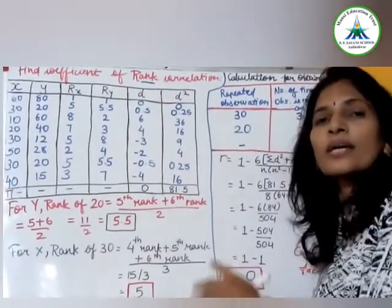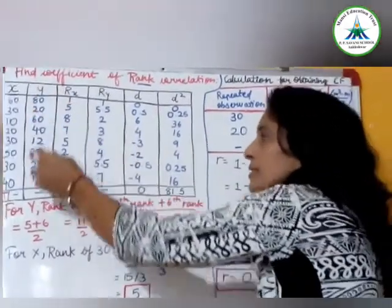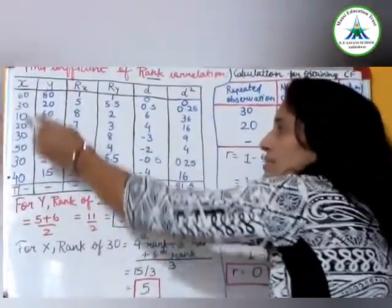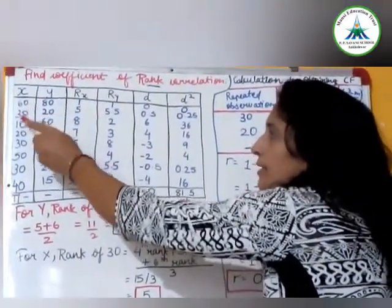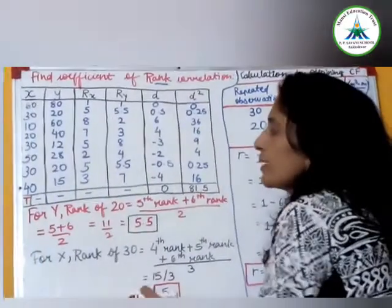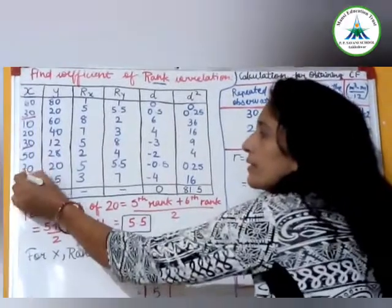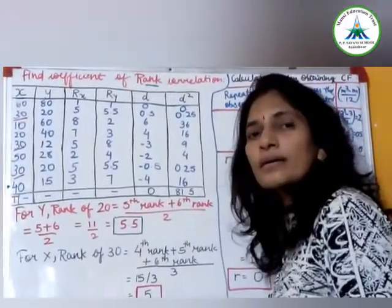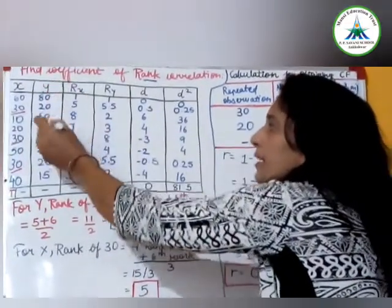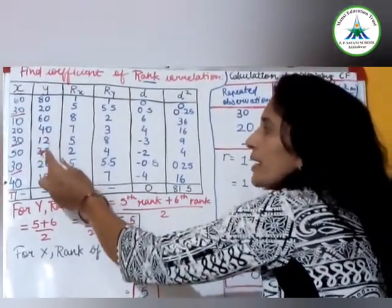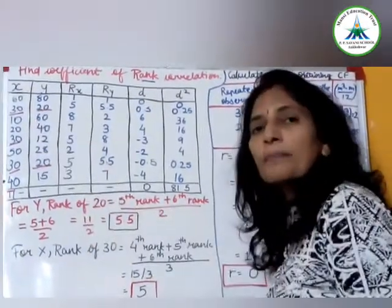This is the sum for x value and y value. See here for x: 60, 30, 10, 20, 30. It means repeated again, 30. Again 30, it means 3 times 30 repeated for x. Then see in y column: 80, 20, 60, 40, 12, 28, 20. Again repeat 20. 20 repeated 2 times.